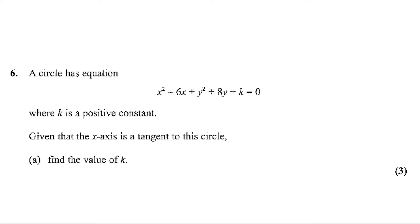Question number 6. A circle has the equation x squared minus 6x plus y squared plus 8y plus k equals 0, where k is a positive constant. Given that the x-axis is a tangent to this circle, part i, find the value of k. This question carries three marks.